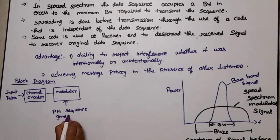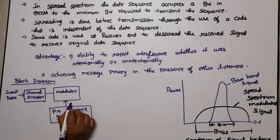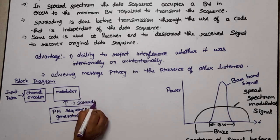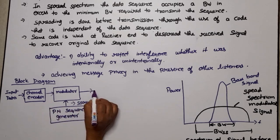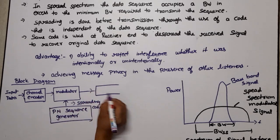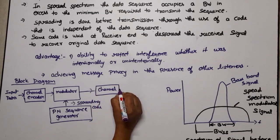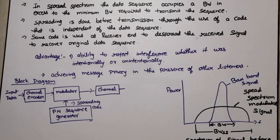This modulator will get first input from channel encoder, second input from PN sequence generator or pseudorandom noise generator. Now basically this sequence will generate spreading code. By using these codes the modulated output will transmit extra bits with input message. Now this signal is passed to channel. This portion is our transmitter.